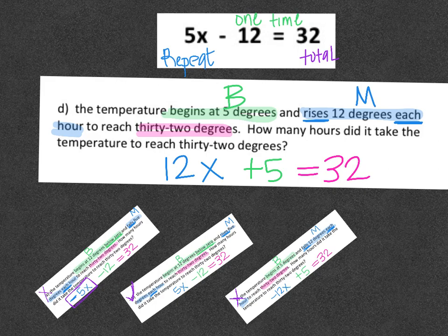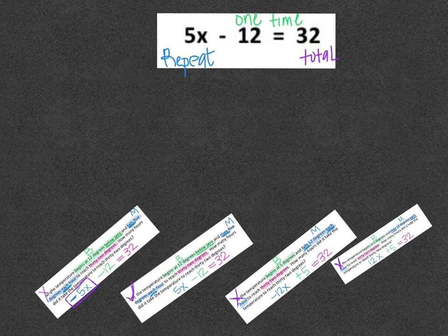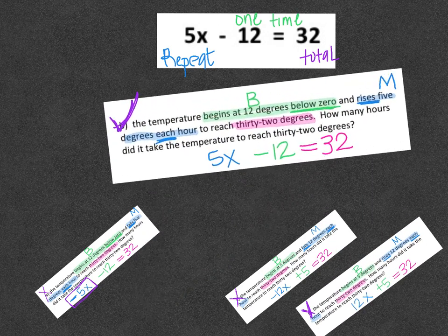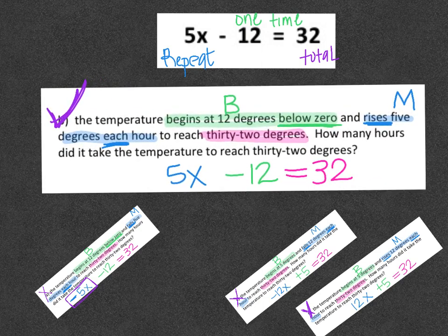When you look at this one and you go up, 5 is supposed to have the x. This time 5 does not have the x. So it's totally wrong again. I'm going to x this one out. That one's wrong. The one we ended up picking that matched everything the way it was supposed to be was answer choice B. It began at 12 degrees below zero. That matched with negative 12. And then it said it rises 5 degrees each hour, which would represent 5x.